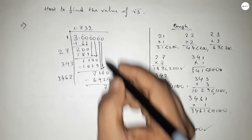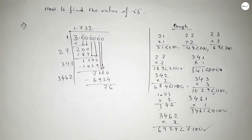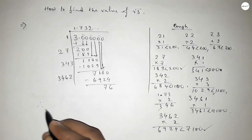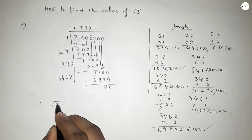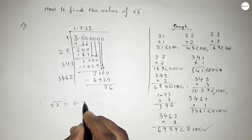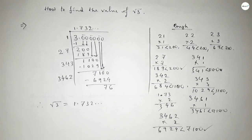The calculation can continue further, but we are finding up to 3 decimals. Therefore, the value of root 3 equals 1.732 and continues. This is the process to find the value of root 3. That's all.